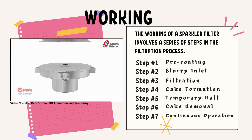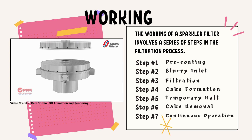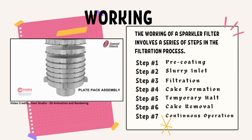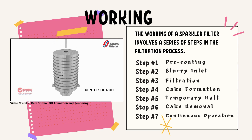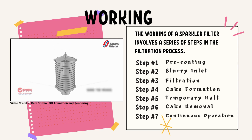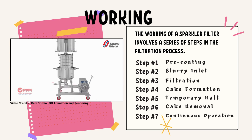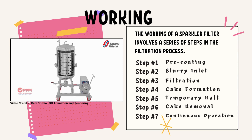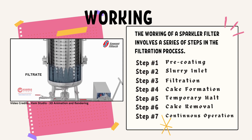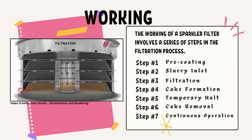Now we will look at the working of sparkler filters. The working involves a series of steps in the filtration process. The first step is pre-coating — before starting filtration, the filter plates are pre-coated with a filter aid such as diatomaceous earth or activated carbon, creating a porous layer that enhances filtration efficiency. The second step is the slurry inlet — the liquid to be filtered, known as the slurry, is introduced into the sparkler filter. This slurry typically consists of impurities or solid particles.